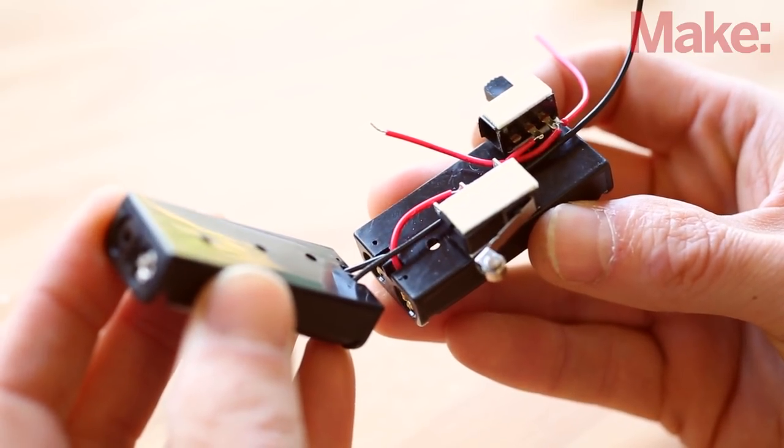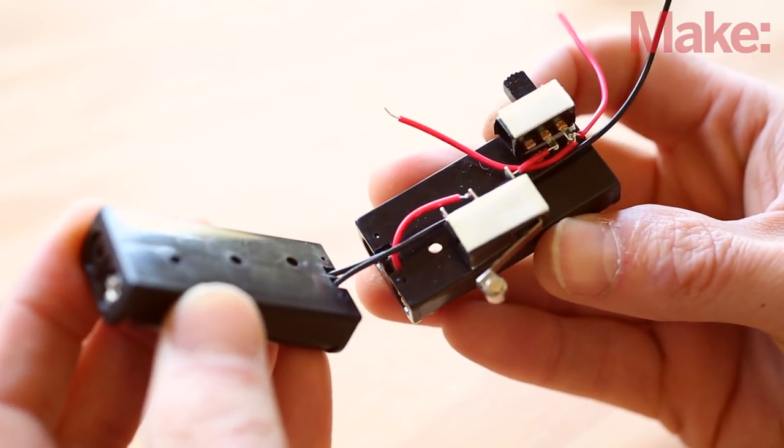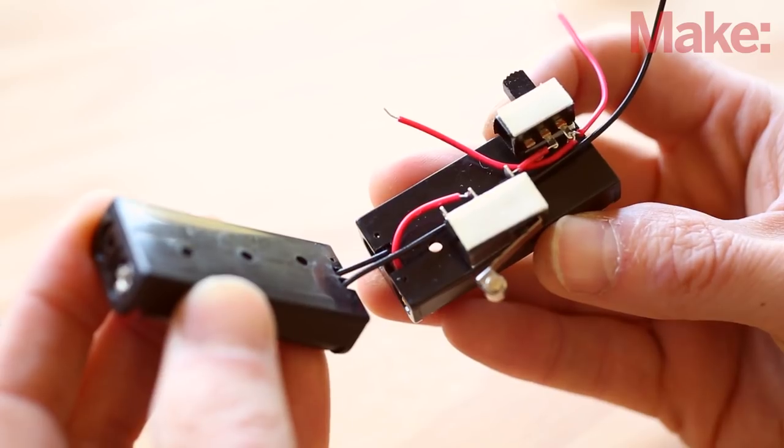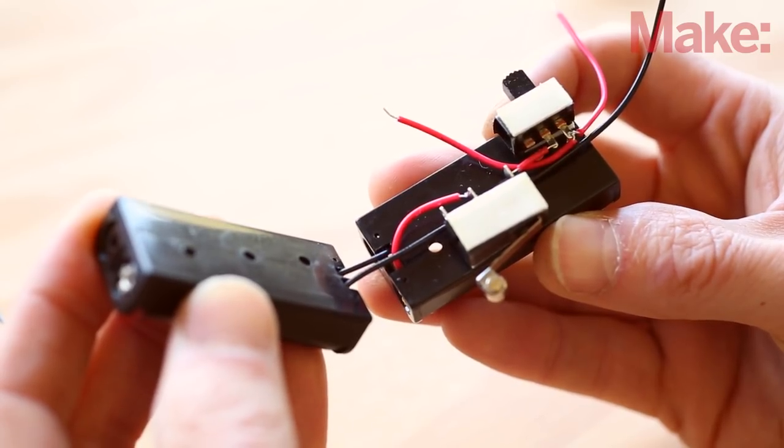Apply additional foam tape to the exposed sides of the two switches. Route the wires so that one red lead goes out the side and one goes out the top. Then, thread the black wire into the second battery holder.